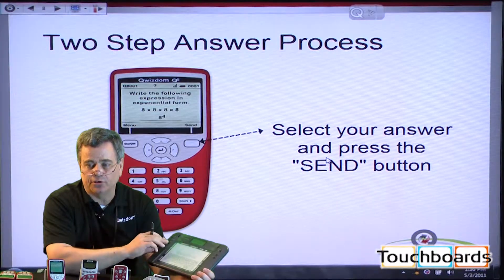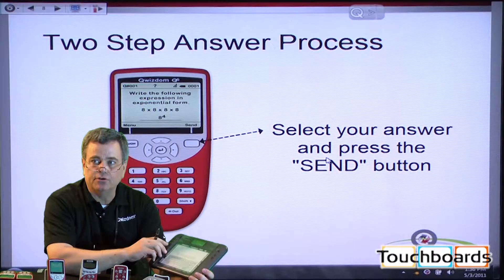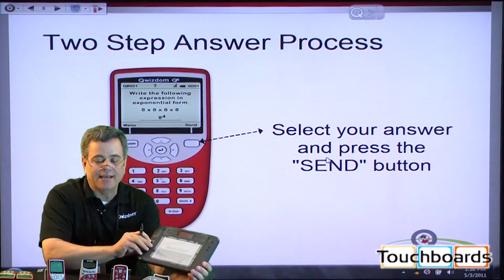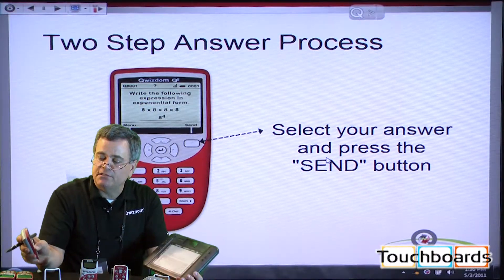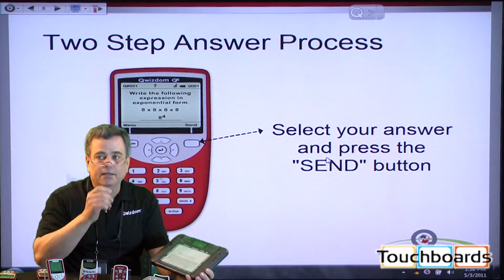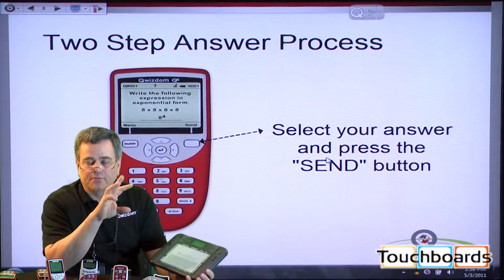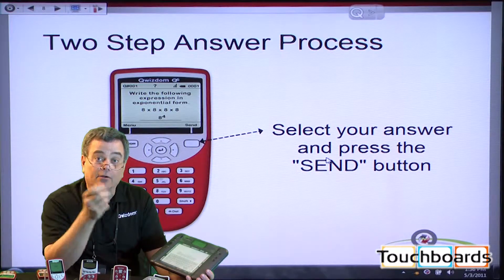It's a two-step answer process with the Q6, and basically what you do is you select an answer using your keys and then just hit send. It's very simple. Having a two-step answer process sometimes is good because it invites a little bit higher-level thinking.